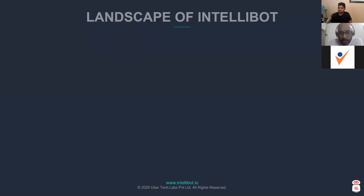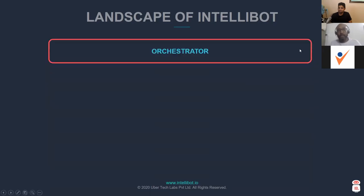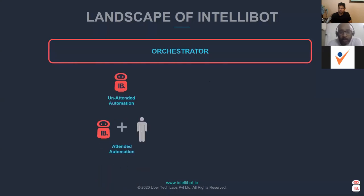The first element is the orchestrator — a command-and-control center, or bot manager, which manages all the bots and your code. Pretty much everyone has it; Intellibot also has it, but the capabilities go far beyond a general orchestrator. Since we are an RPA organization, we provide two kinds of bots: unattended automation bots and attended automation bots — you can call them RDA or DPA.